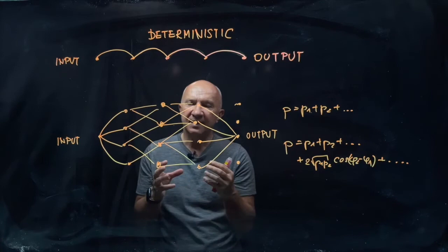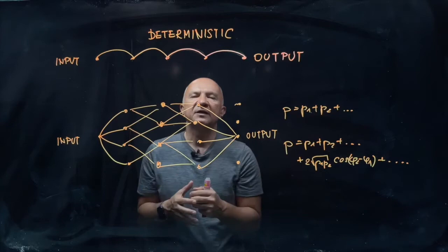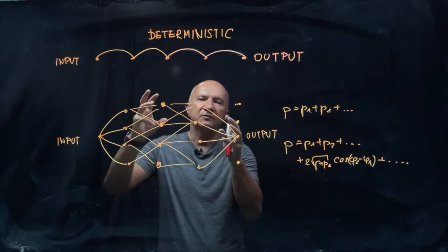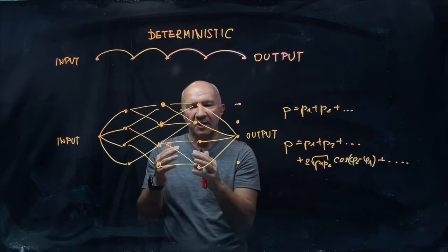So the whole art of quantum computing is essentially to prepare a huge quantum interference experiment within a piece of hardware that is your quantum computer. You start with a given state, you build a quantum interference, so you allow your device to follow different computational paths.